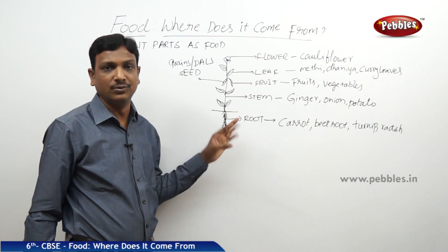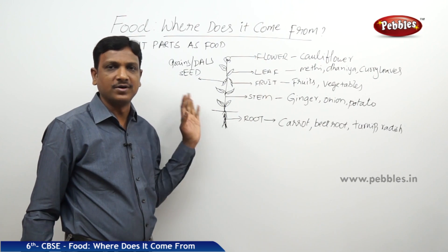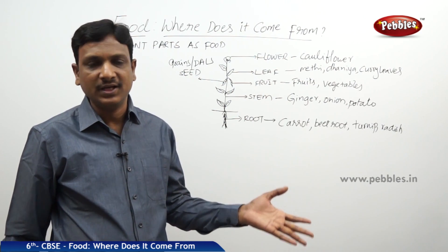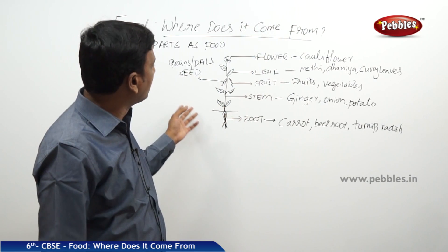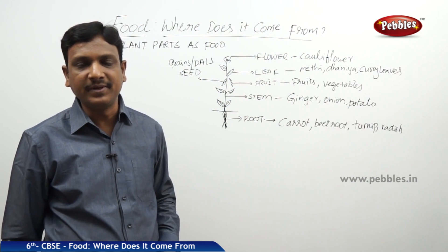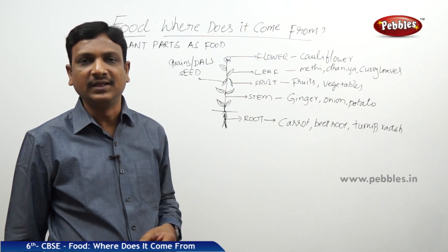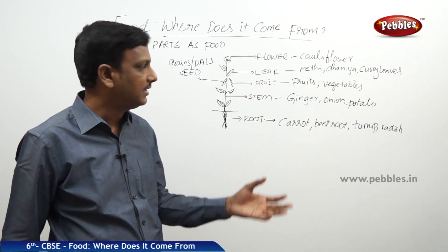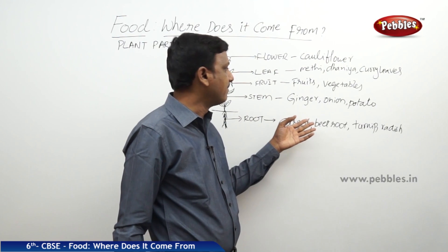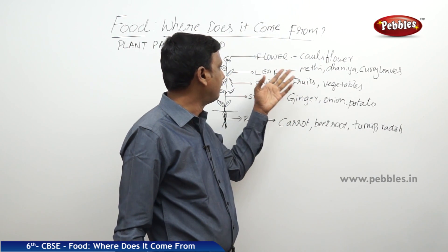No part is an exception — all parts of the plant are useful. Some way or another we are consuming all different parts of the plant. In some cases we consume the whole plant itself, in some cases the root, stem, fruit, leaf, flower, or seed.